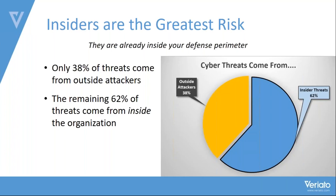The typical outside hacker includes a range from nearly unskilled script kiddies — who pull tools from the internet without real sophistication — to the hacking elite: state-sponsored attackers with great skills, money, backing, and time to steal intellectual property. These outside attackers account for 38% of threats. Most are script kiddies, but some are ultra-elite and truly want to break in.